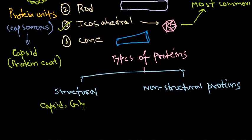Among the structural proteins we can have capsid proteins, glycoproteins, phosphoproteins, and all these different kinds of proteins.